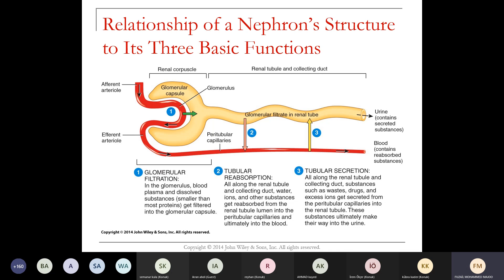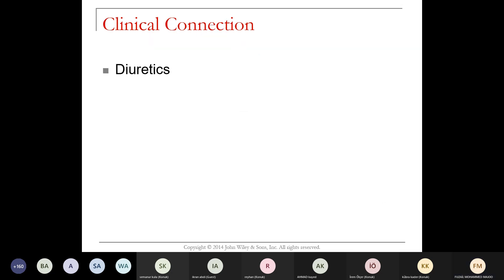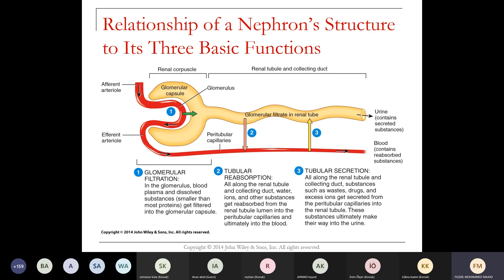Here you can see the glomerular capsule, the afferent arteriole, and the efferent arteriole. As that filtrate is moving through, many things end up being pushed out, while other things come back in and pass through. There's also a blood vessel running the length of the tubule.